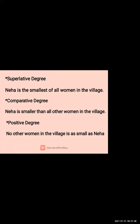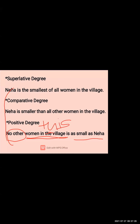Let's see another example for positive degree. Neha is the smallest of all women in the village. Now we have to convert this sentence into a positive. First, add the new words: 'no other woman in the village'. Then complete it: 'no other woman in this village is as small as Neha.'